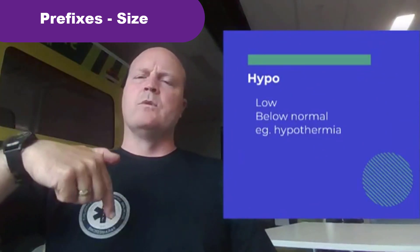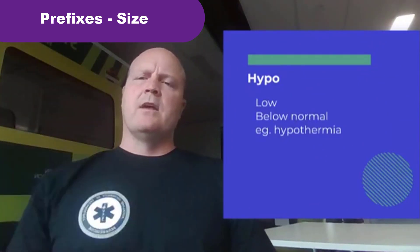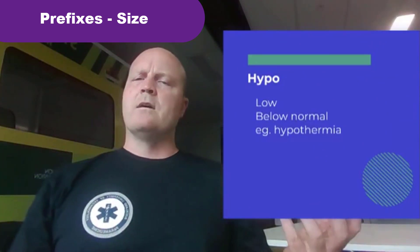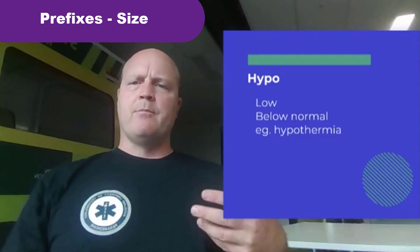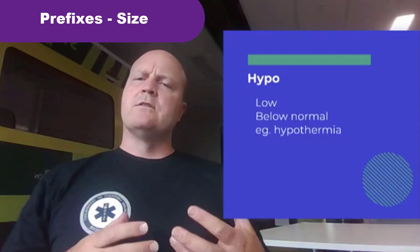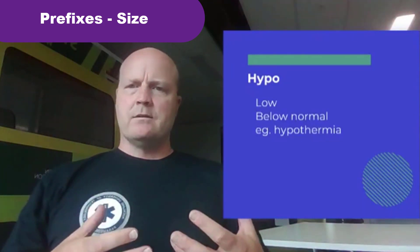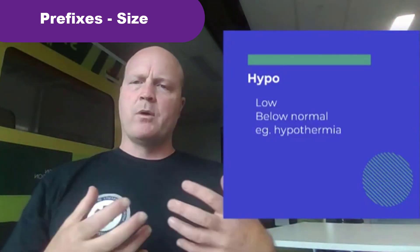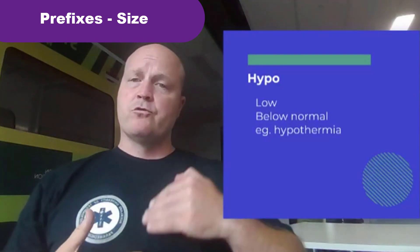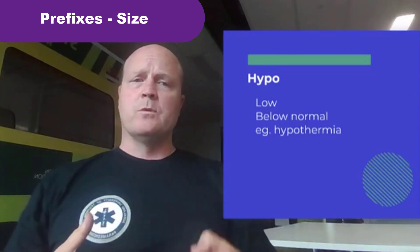Hypo means low, below normal. An example would be hypothermia. Hypo is low, and thermia is to do with temperature. So hypothermia is when our body temperature drops below normal.